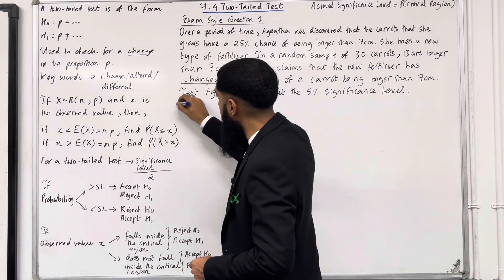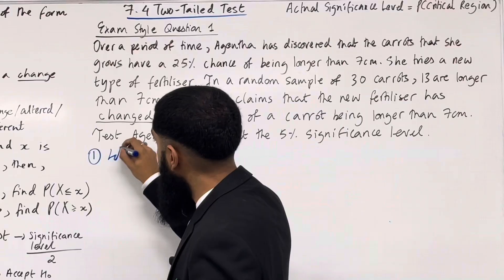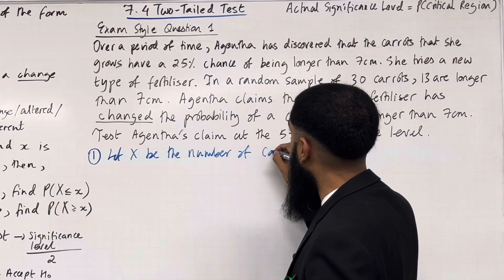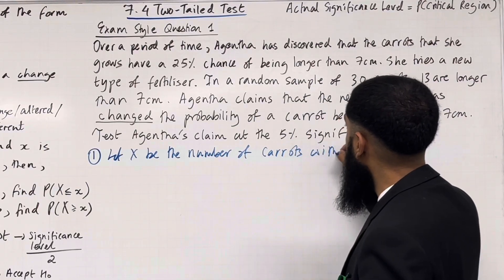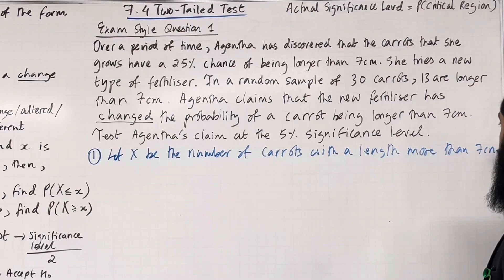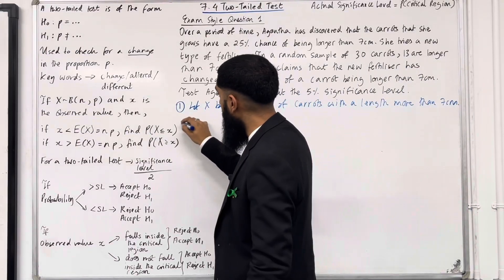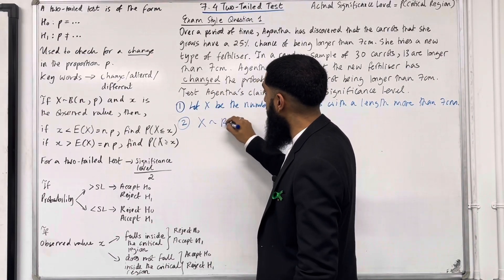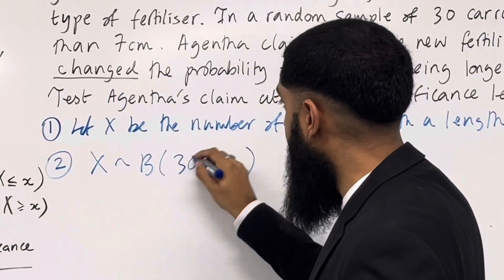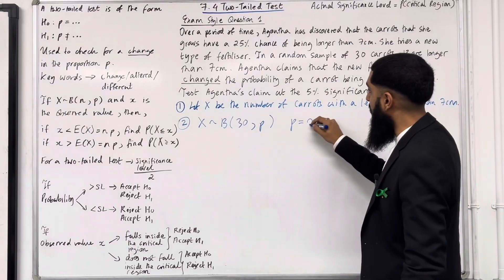Step 1 is to define the test statistic. Let capital X be the number of carrots with a length more than 7cm. Step 2, write down the distribution for X. X takes on a binomial distribution with 30 trials and a fixed probability P, where P is assumed to be 25%, so 0.25.